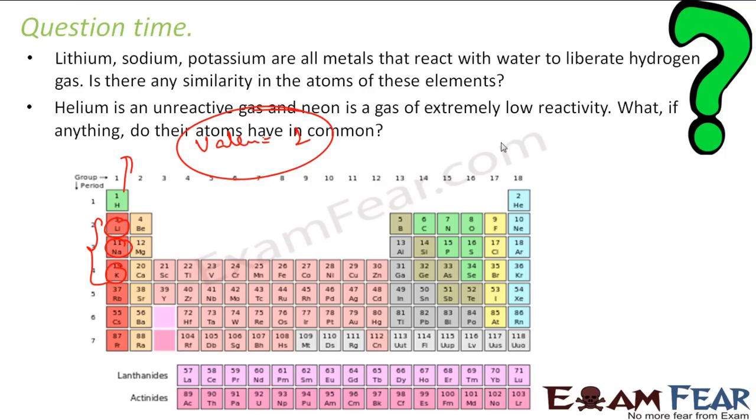Helium is an unreactive gas and neon is an extremely low reactive gas. What if anything do they have in common? Yes, they do have common. What is the common? Common is that they have filled outermost shell. Please note, you can't say they have eight or two because this has two elements in outermost shell, this has eight, but they are all filled because for this, this is K-shell and K-shell needs only two electrons to get filled. So you can see that they have filled outermost shell.